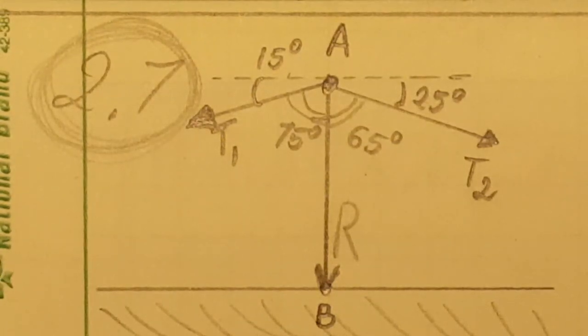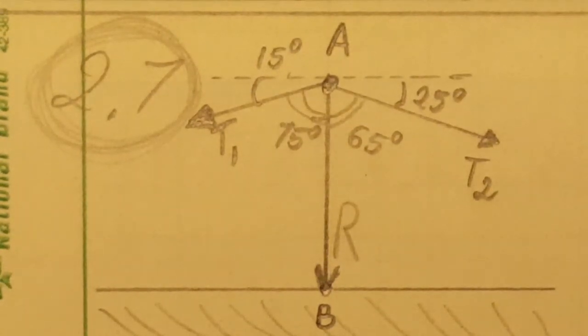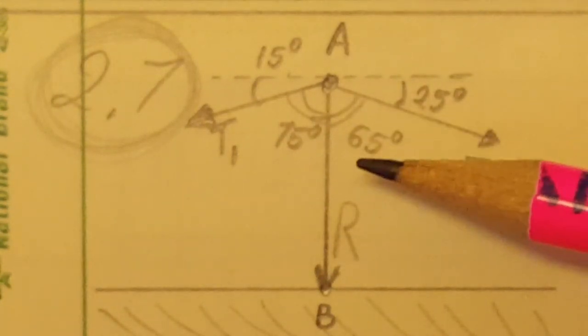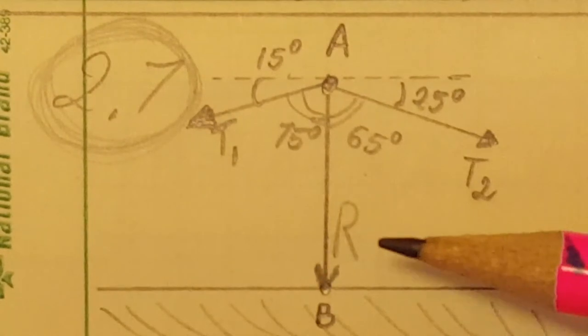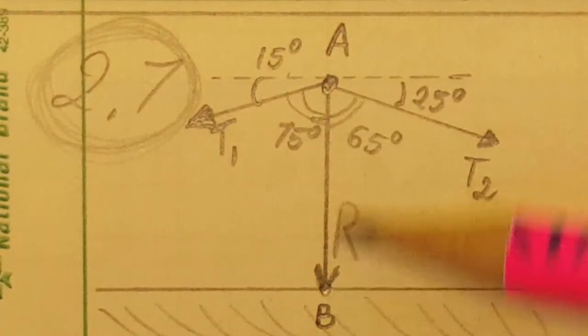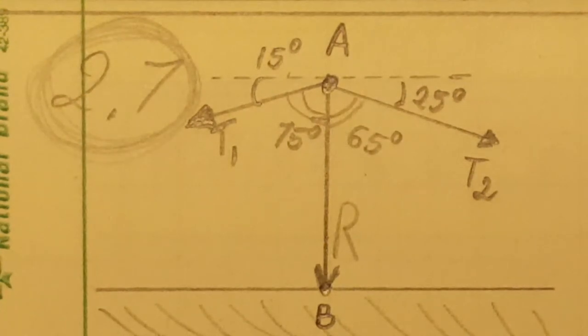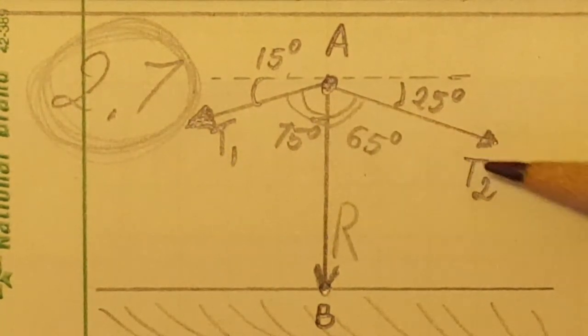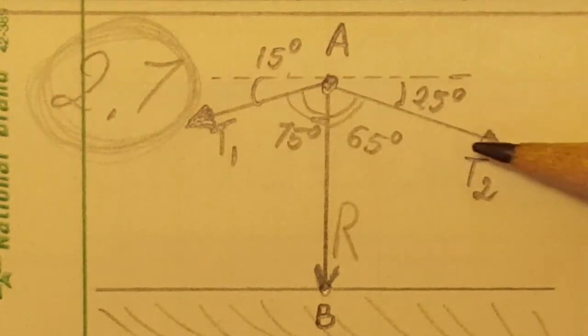Okay, in this problem we're going to do some vector calculations. A telephone cable is clamped at point A to a pole AB, and knowing that the tension in the right hand portion of the cable T2 equals 1000 pounds, they want us to determine by trigonometry the required tension in T1.